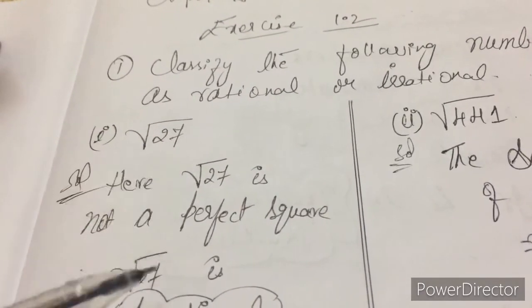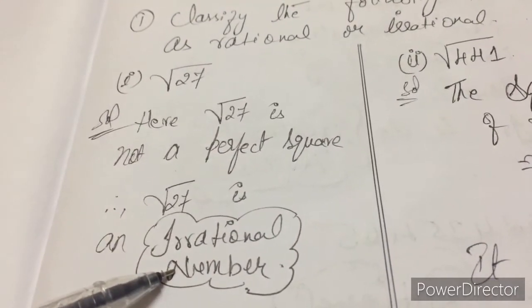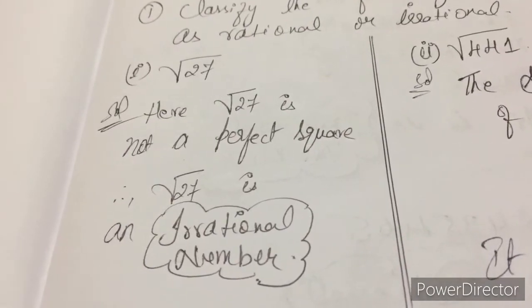Root 27. It is not a perfect square. That is why it is an irrational number. Here for one mark problems we can accept this.